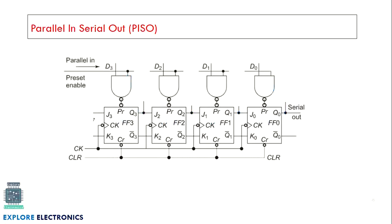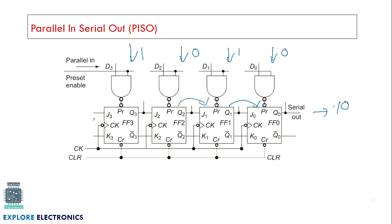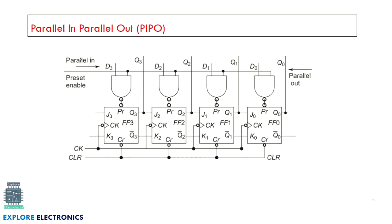In Parallel In Serial Out (PISO), we load all flip-flops simultaneously from the outside world with a value like one zero one zero, and then read the output one bit at a time. We get zero first, then one, then zero, then one serially — producing the output one zero one zero.